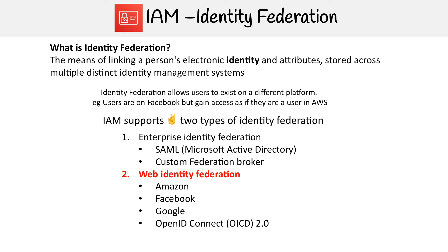The protocols you can use for enterprise identity federation would be SAML, which is compatible with Active Directory, a very popular Microsoft Windows identity system, or custom federation brokers, which allow you to connect to other identity systems. Generally with enterprise identity federation, you're doing things with single sign-on. But for the scope of the developer associate exam, we don't need to really know about that.